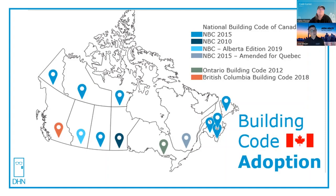Quebec uses the 2015 version of the code, but they use a version that was amended specifically for them, and that was adopted in 2022. Alberta uses the National Building Code 2015 edition, but they use the Alberta edition of the National Building Code, which was adopted by them in 2019. In a move that will surprise nobody, British Columbia and Ontario feel like they need their own building codes. The BC building code is the 2018 version, and the Ontario building code is the 2012 version.